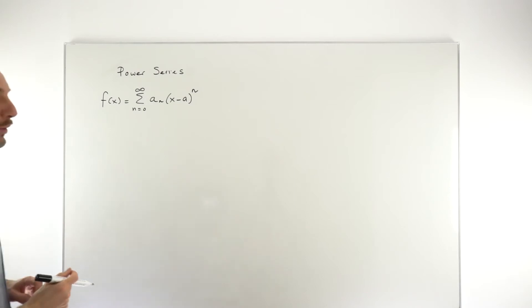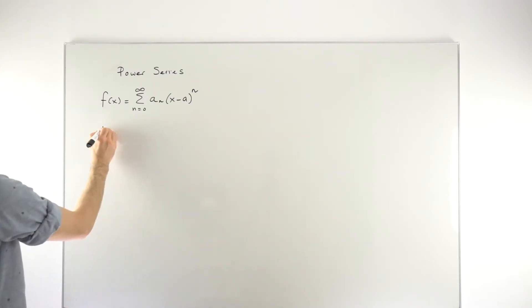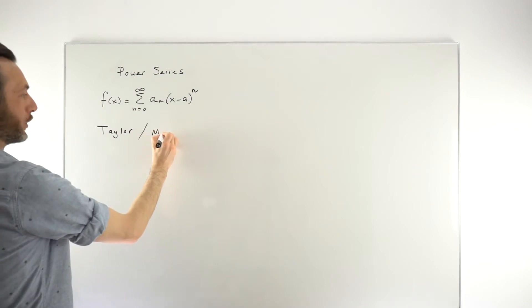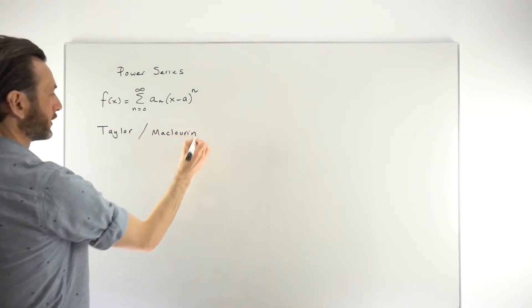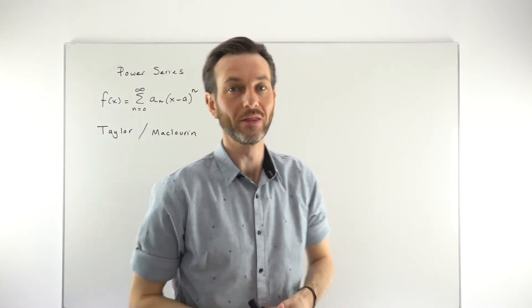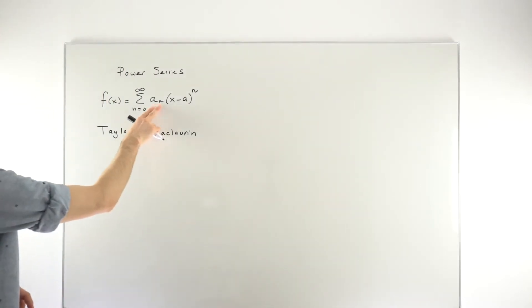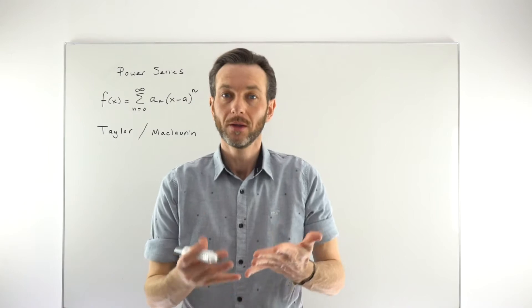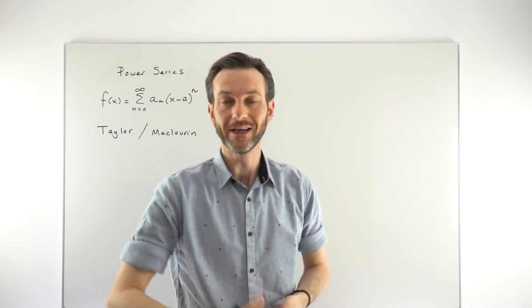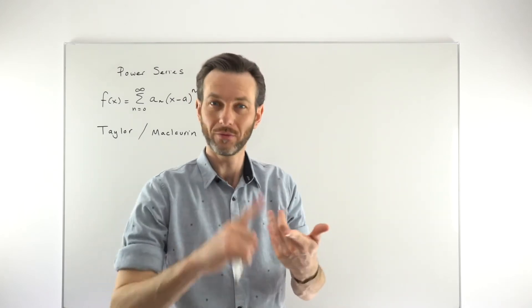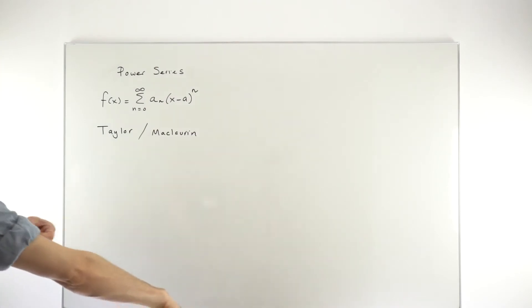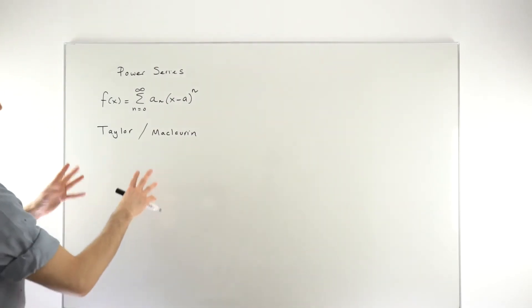There are two types of power series we're particularly interested in. One is called a Taylor series, and then a less general form of a Taylor series — the one we're going to look at in this video — is called a Maclaurin series. Both are really closely related, and they generate the coefficient terms by differentiation. So these have to be functions that are infinitely differentiable, because we generate each coefficient term by taking higher and higher order derivatives — first, second, third — as many times as you want for these series to work.